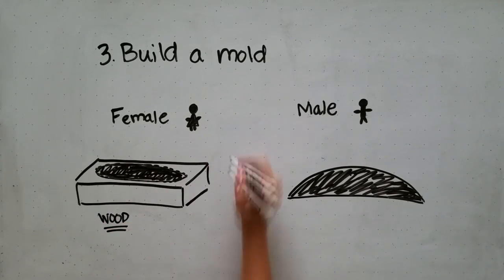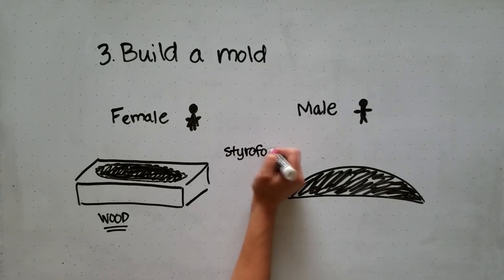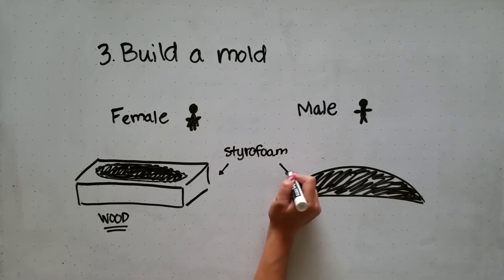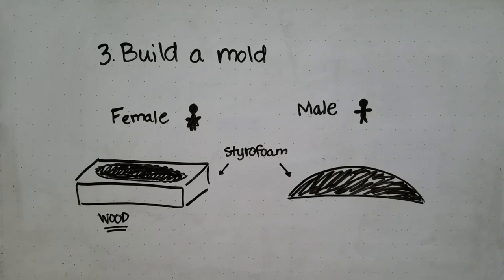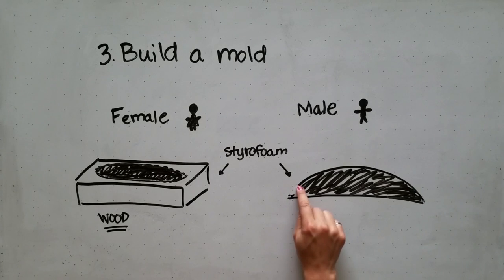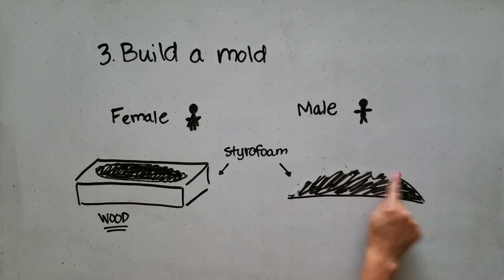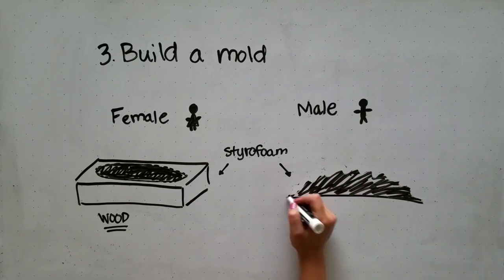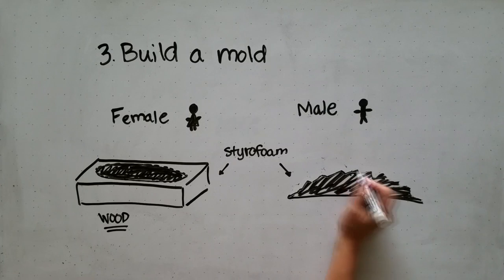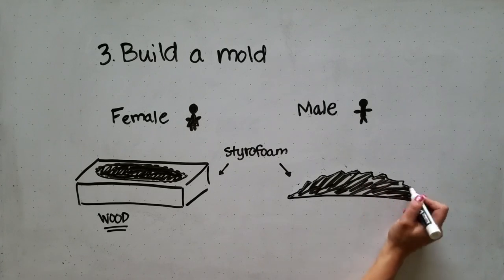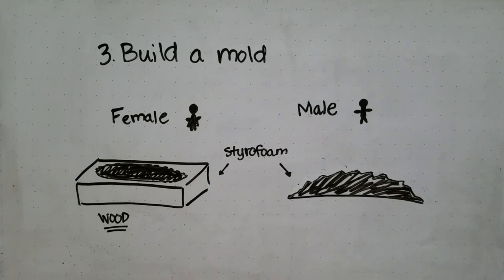Molds are most commonly made out of wood or styrofoam. However, the downside of styrofoam is that if you get a low density, normal styrofoam, it will generally deform when you start placing concrete onto it. To prevent this, you have to make the styrofoam stronger by adding some sort of external surface to it.